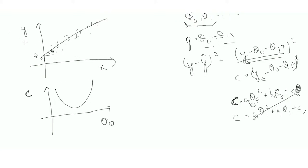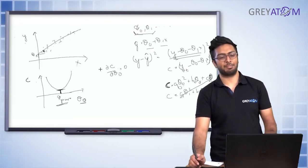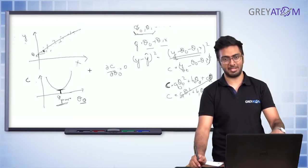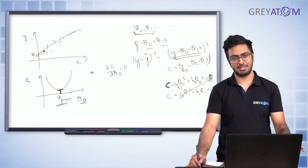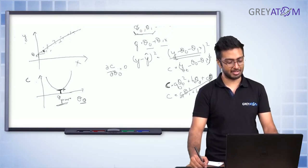Since the cost function is a quadratic function of theta, when plotted it produces a parabolic curve. I want the value of theta where my cost function is minimal — that's theta prime. One way is to solve d(C)/d(theta_0) = 0 directly. But there's another very common way — gradient descent — which is especially important in deep learning where it is extremely popular.